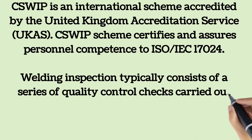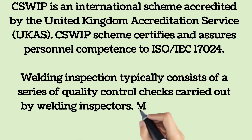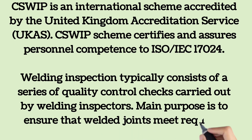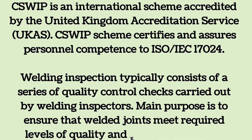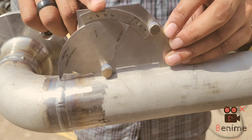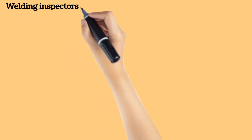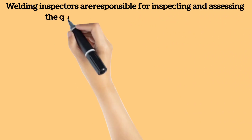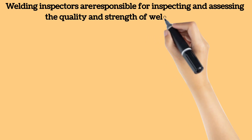Welding inspection typically consists of a series of quality control checks carried out by welding inspectors. It ensures welded joints meet required levels of quality and are fit for purpose. Welding inspectors are responsible for inspecting and assessing the quality and strength of welding work. Their job is to ensure welds are safe and ready to function as part of the device or structure.